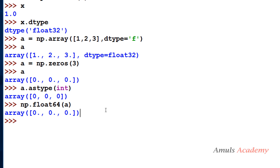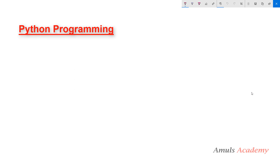To determine the type of an array, use the dtype attribute. We already discussed this — if I want to determine the data type of any array, I use the array name followed by .dtype and we get the data type. That's it for now, guys. Thank you for watching, don't forget to subscribe to my channel. I'll meet you in the next class. Till then, take care.